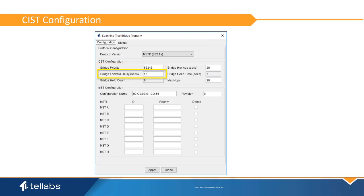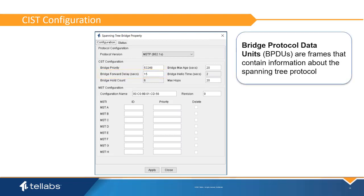Bridge forward delay is the time spent in the listening and learning state of the RSTP protocol machine. The default on most bridges is 15 seconds and can range from 4 to 30 seconds; this is typically not modified. Bridge hold count defines the maximum number of BPDUs that can be transmitted during every hello time period; the default is 6 and is not editable. The max age time is zeroed when BPDUs are received. When it expires, it causes a port to update its state to designated and begin going through the listening and learning state to the forwarding state. The default is 20 seconds and should not typically be modified.